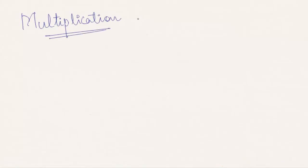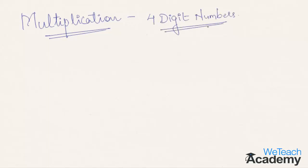Hi, welcome to We Teach Academy. In this presentation we are going to discuss how to multiply a four digit number in a more simple and faster way. We had earlier shown you the multiplication of two digit and three digit numbers in a simple format, and now with the help of the same concept, let's try to multiply four digit numbers. Let's proceed with a simple example: multiply 1624 with 2352.